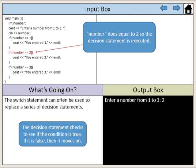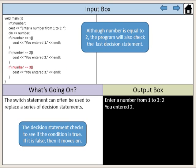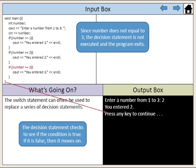Number equals 2, so the decision statement is executed. Although number is equal to 2, the program will also check the last decision statement. Number does not equal 3, so the decision statement is not executed and the program exits.